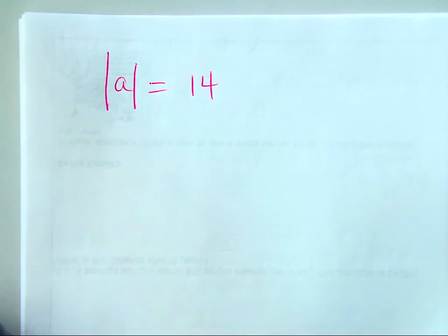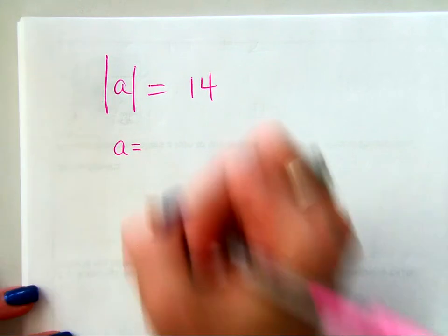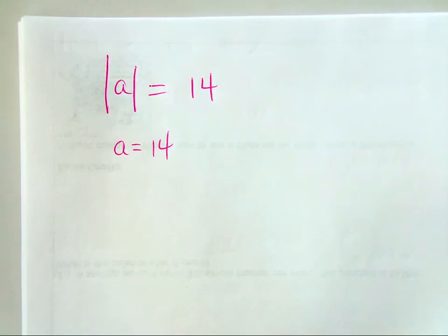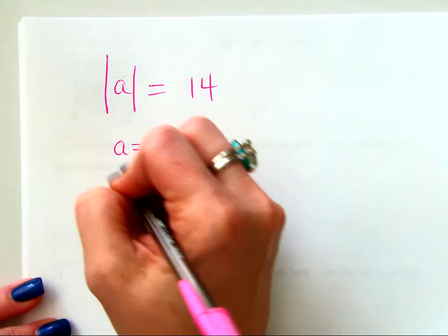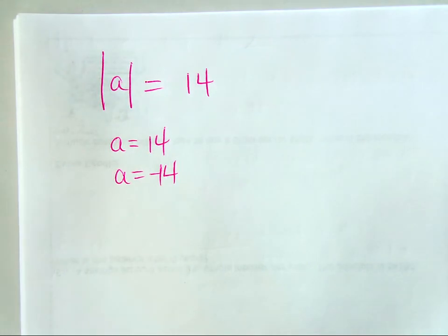Tell me all the numbers, quietly, in your head, or raise your hand, that A could equal. How many values are going to work for A? A could equal what? Give me one thing that A could equal, Kaylee. A could be 14. What else could A be? Carter? Negative 14. Right? Does that make sense? All right. You got this. So, A could equal 14 or negative 14.